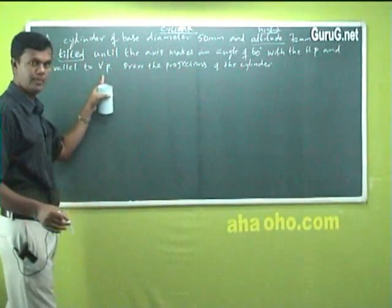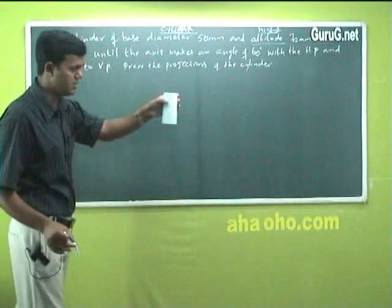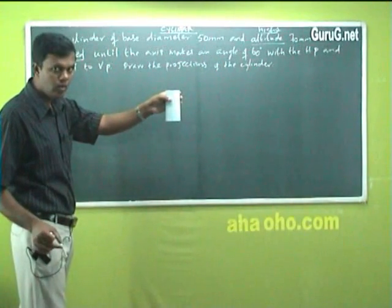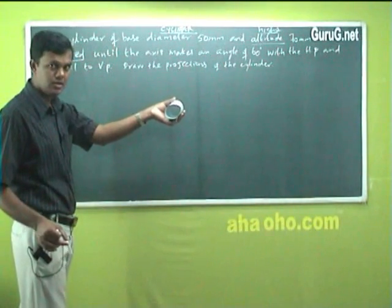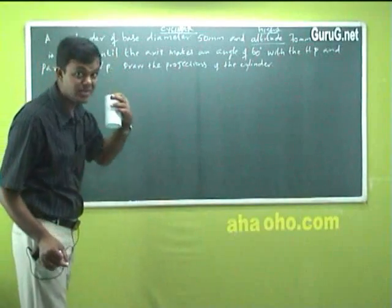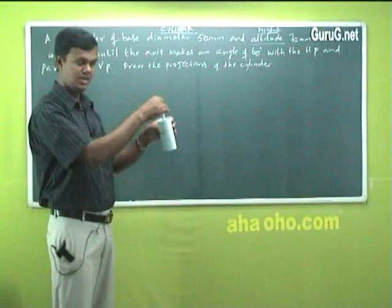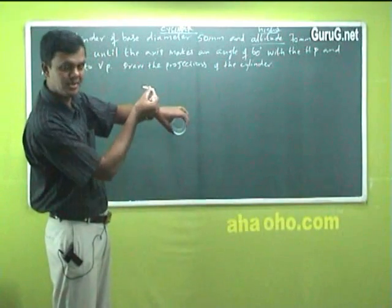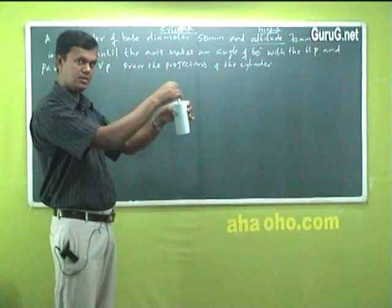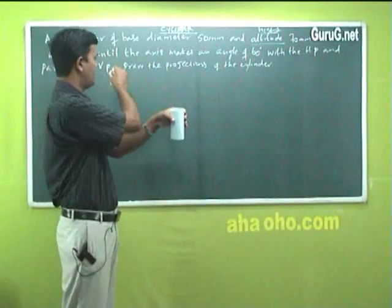Obviously, we are drawing it on VP, and parallel to VP, because making the cylinder parallel to VP. Is this parallel to VP now? Or it should be like this. Parallel to VP means you should always think axis is parallel to VP. This is the axis. If you make it like this, the axis will be perpendicular to VP. This is wrong. This is the satisfied condition, it is parallel to VP.